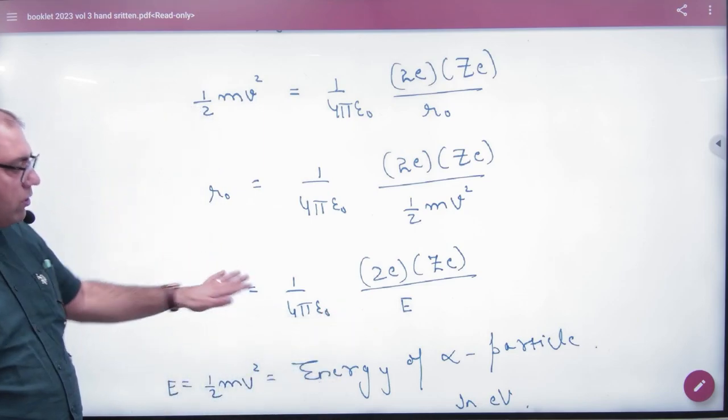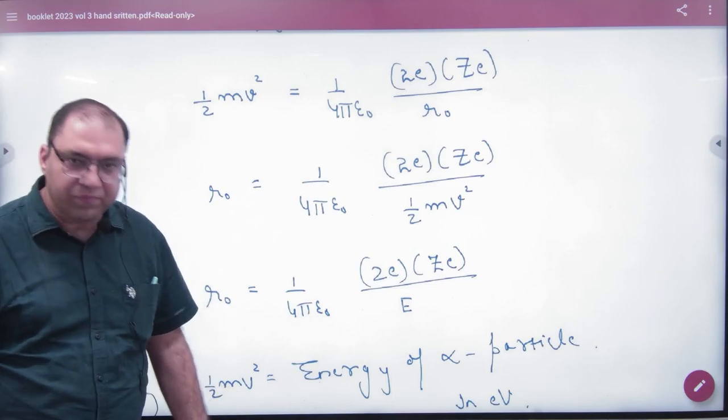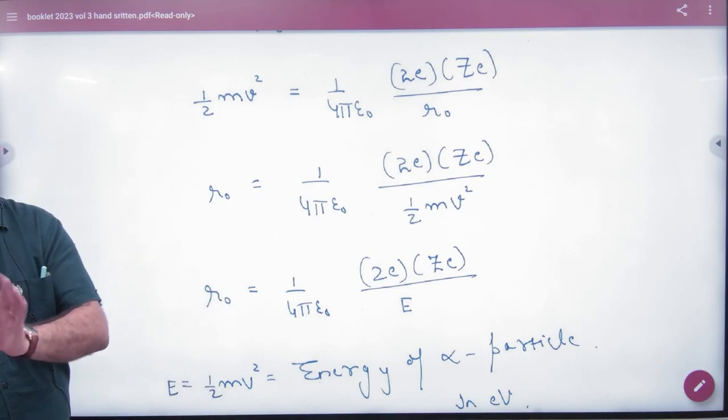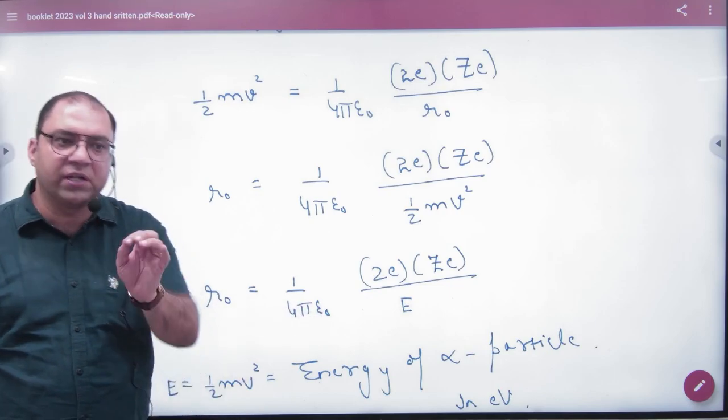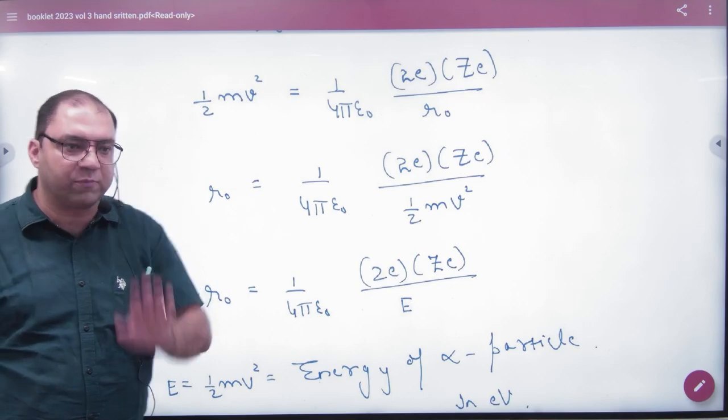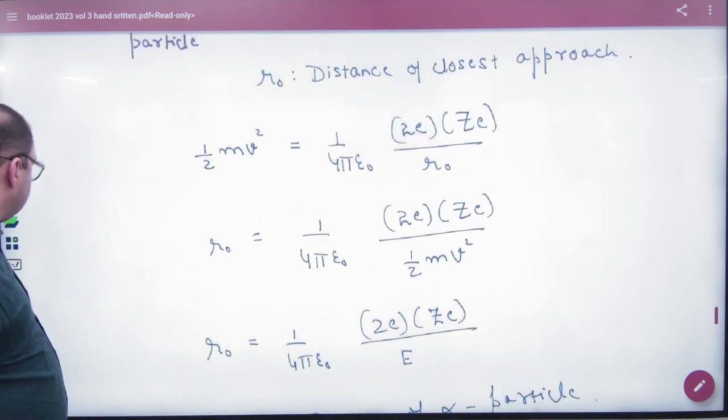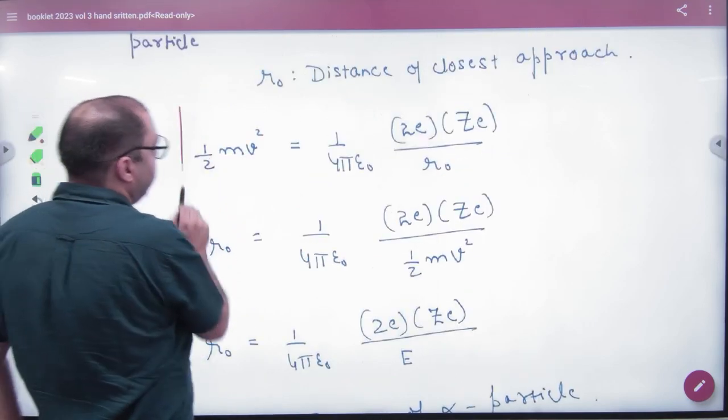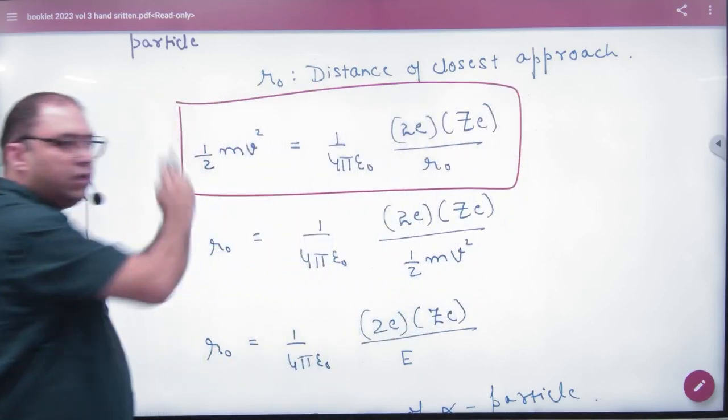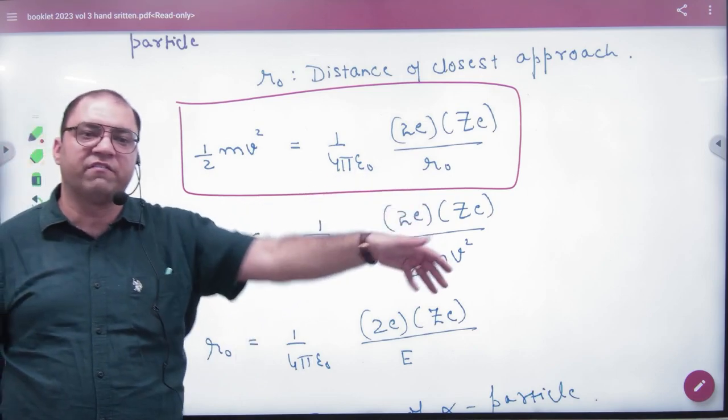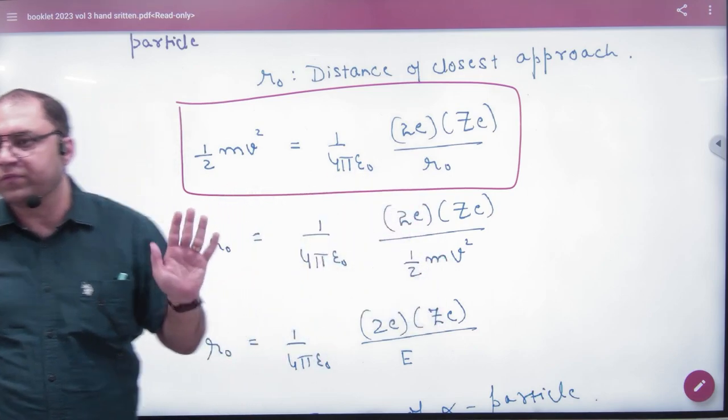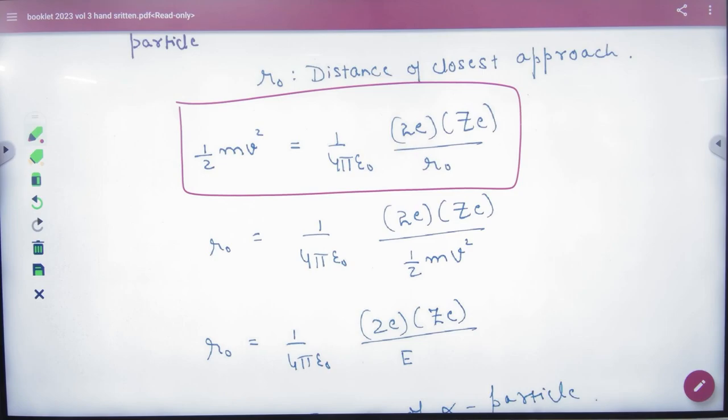This is the formula. If you are maintaining your formula booklet, put a heading of distance of closest approach and just note this in it. If you have a question, you will know that the kinetic energy is converted into electrostatic potential. So the first point is clear here. Just note this in it. And write that r0 means distance of closest approach.